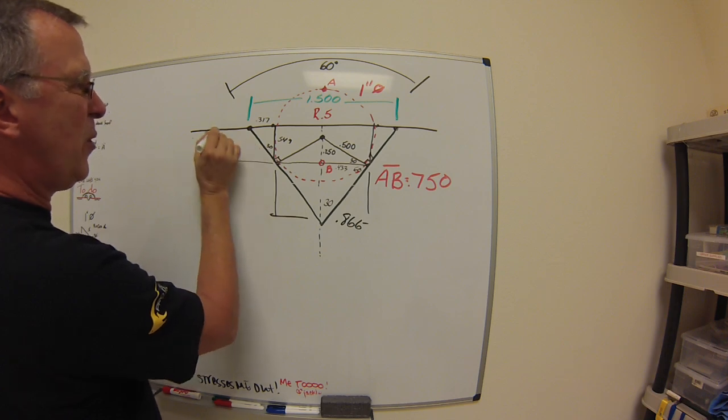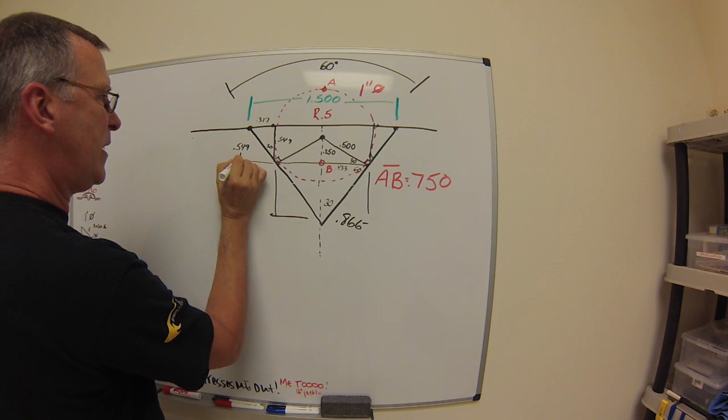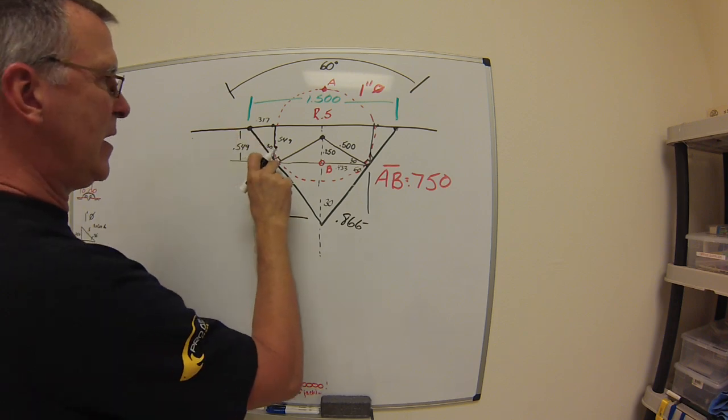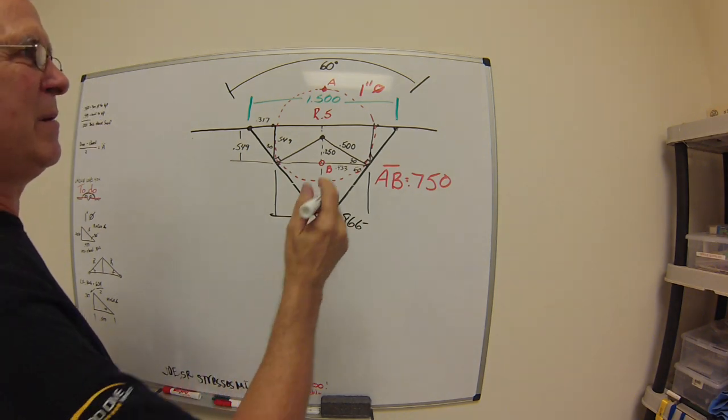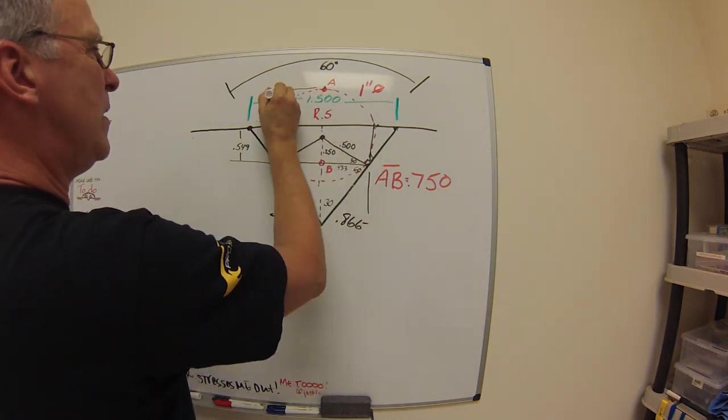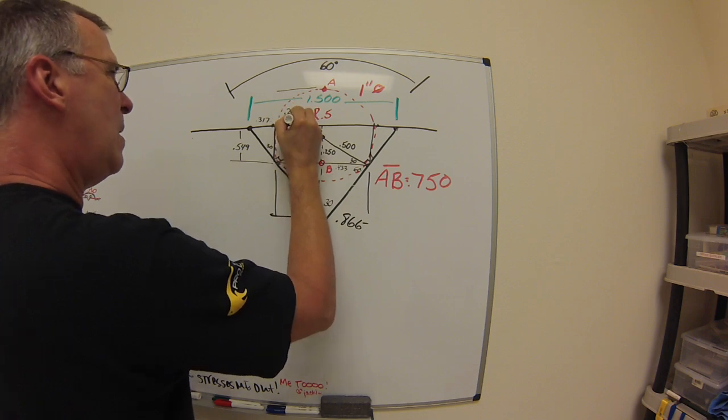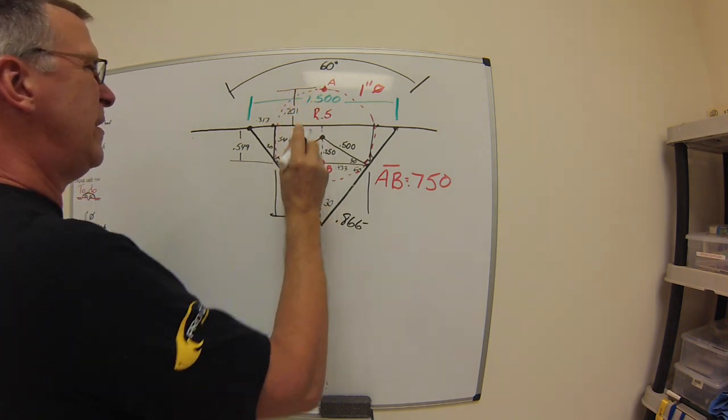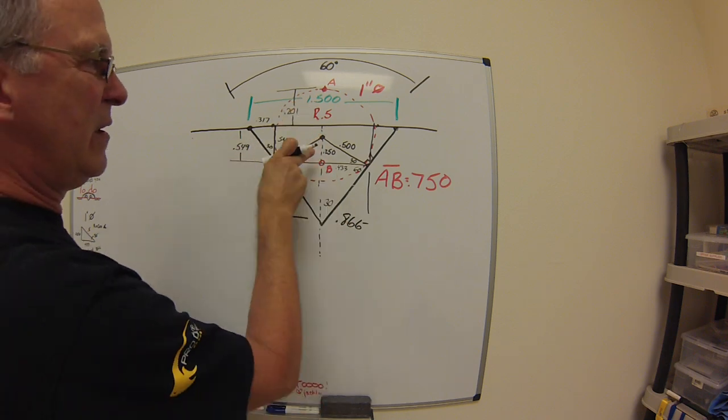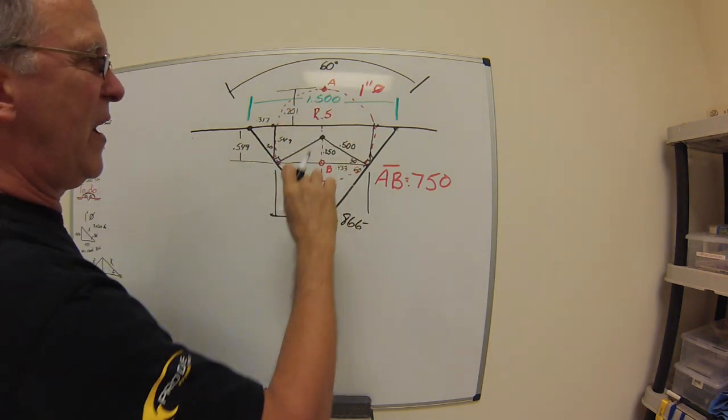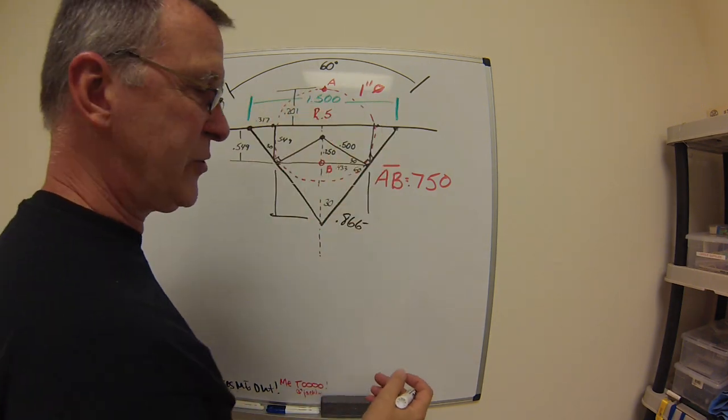So, from the face of your part to your gauge point, 549. But, we know that the gauge point to the top of the ball is 750. So, what does that make the measurement you're looking for? 201. Right there. 201, 549, 750. 250, radius of 500, 750. All the information is there. All you need to do is break out your trig book.